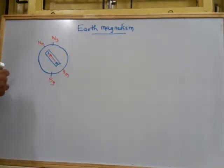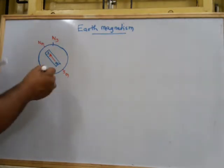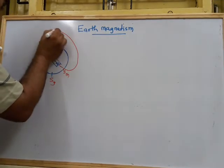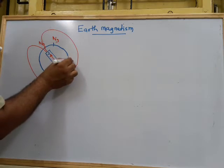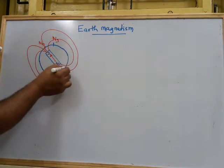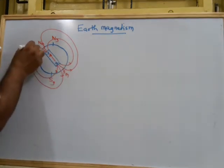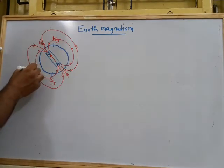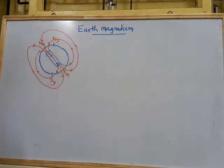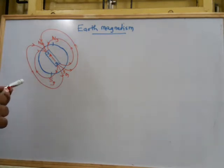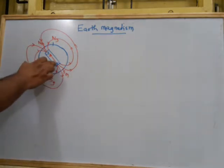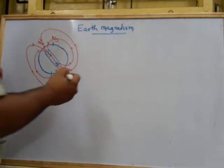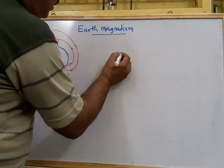You can also consider that from the North Pole, the field lines go outward and then enter at the South Pole. So the field lines will go like this and enter like this. This is all about Earth's magnetism — around the Earth there is a magnetic field. So we have four important points: geographical north, geographical south, magnetic north, and magnetic south.